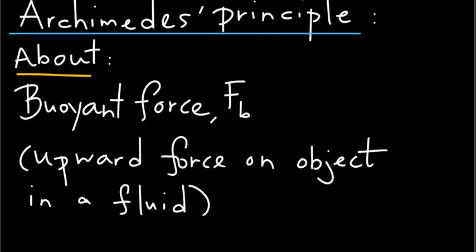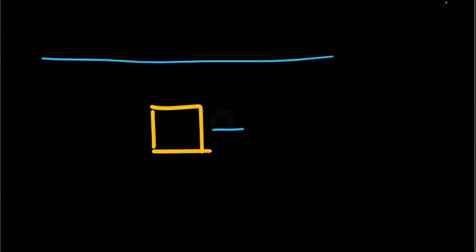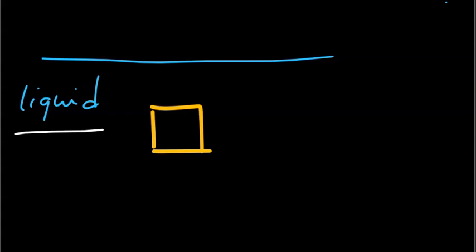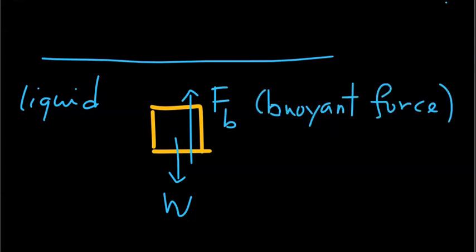Next, let's look at Archimedes' Principle. Before we get into the details, we need to understand buoyant force, which is a crucial ingredient in Archimedes' Principle. Buoyant force is an upward force that acts on an object immersed in a fluid. If you have an object immersed in a liquid — fully or partially — the free body diagram shows the weight W acting downward and the buoyant force acting upward, imposed by the liquid on the object.